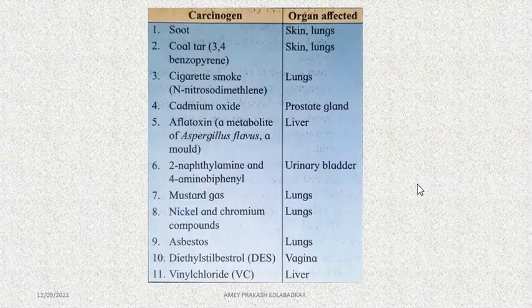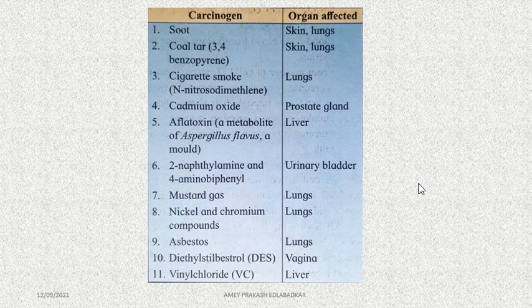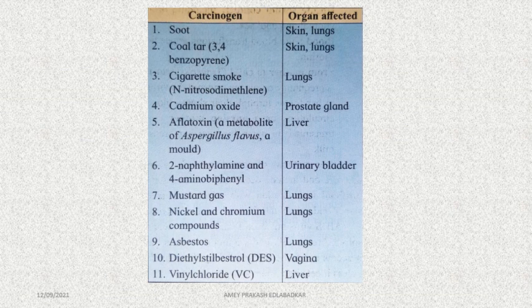The textbook provides a table on carcinogenic substances and organs affected — match-the-column and two-mark questions are expected from here, where a carcinogen is given and the organ affected must be identified. With this, the discussion about cancer, its causative agents, and its types is over. In the next video, we shall be meeting with another important disease — AIDS, Acquired Immunodeficiency Syndrome.